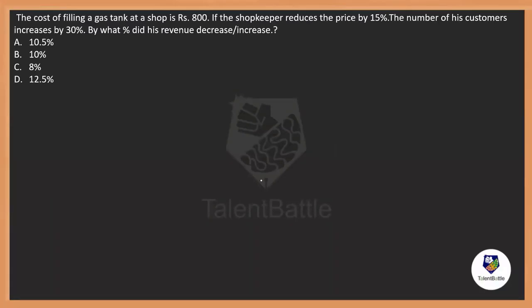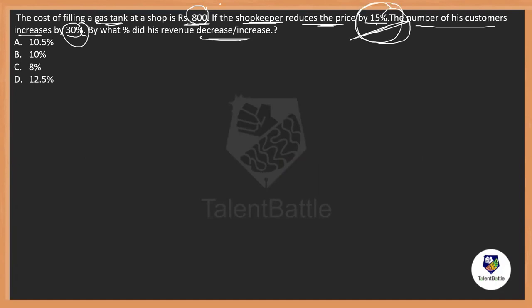The cost of filling a gas tank in a shop is 800 rupees. If the shopkeeper reduces the price by 15%, the number of customers is increased by 30%. So the actual price was 800 rupees. If he reduces the price by 15%, the customers are going to increase by 30%. We need to identify what is the percentage increase or decrease in the revenue. When he decreases the price, there might be some change in the revenue, and they are asking us to identify what is the value.